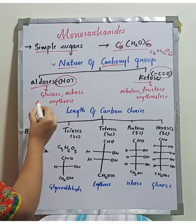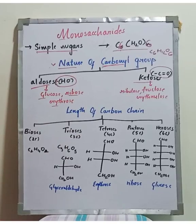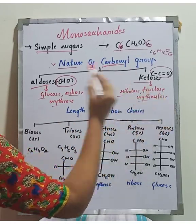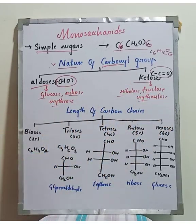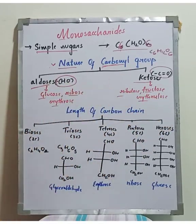Examples of aldoses include glucose, ribose, and erythrose. Examples of ketoses include ribulose and fructose. Glucose and fructose are different from each other based on their carbonyl group type.